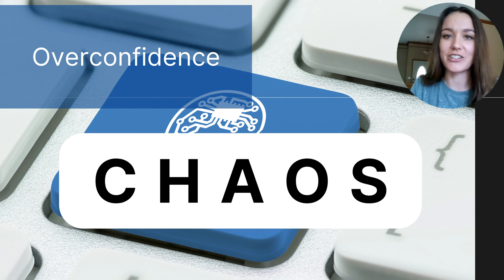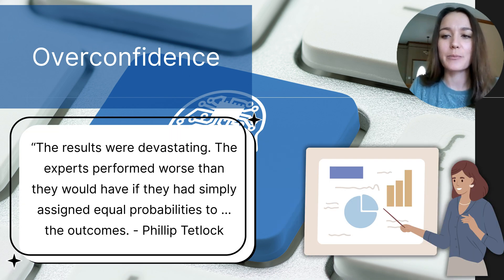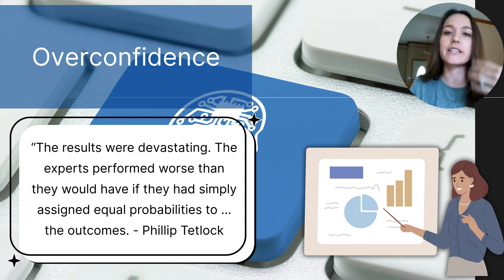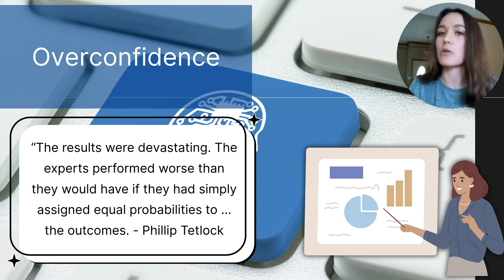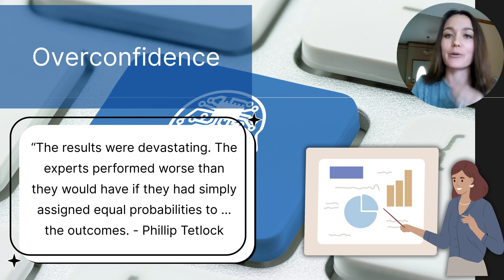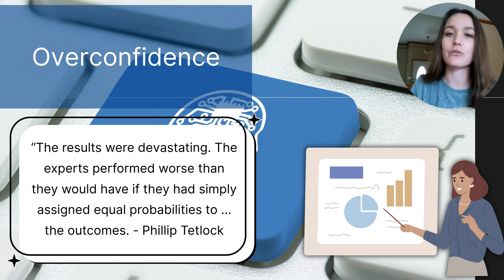Another example comes from Philip Tetlock, who surveyed 27,000 people he considered experts in world events. He asked them to predict future world events and rate how correct they thought they would be. On average, these experts thought they would be about 80% correct in their predictions. But Tetlock found they were actually only 40% correct. These findings teach us that we tend to be overconfident in how well we can predict future events, and we really need to rely on research, not our own assumptions.